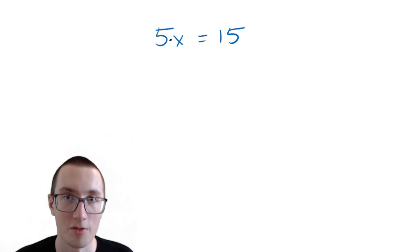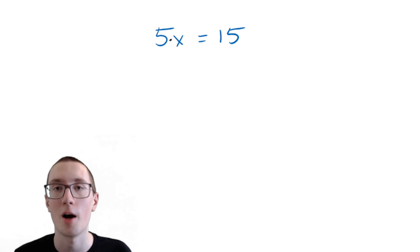So how can we get rid of this 5 and leave x by itself? No, we're not going to subtract 5 from both sides, because subtraction is not the opposite of multiplication. Before that worked with the addition, but in this case, 5 is being multiplied by x. So we need to do the opposite of multiplication, which is division.